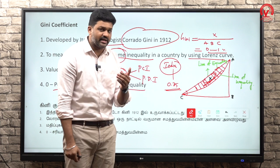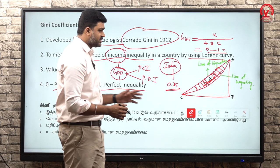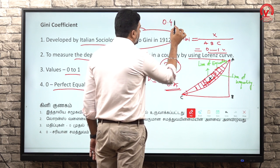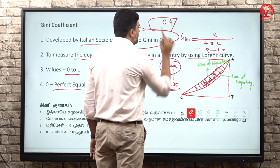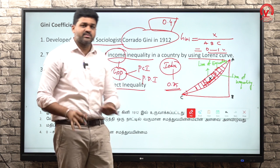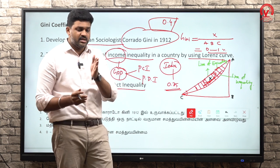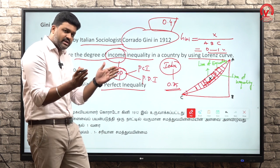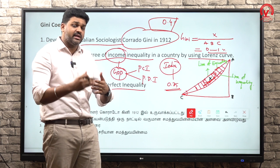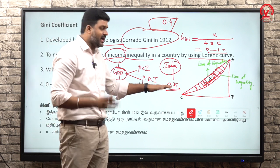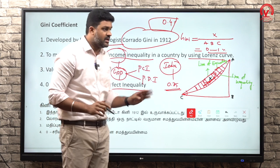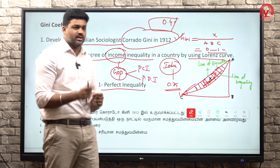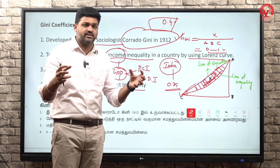India's income inequality - the Gini Coefficient value for India is in the range of approximately 0.4 to 0.5.